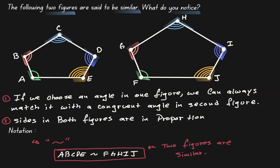The order matters when we are naming similar polygons. Those angles which are congruent need to be in the same location. Angle A was congruent to angle F, so notice that they are both in the first position in our statement. Angle B was congruent to angle G, so they are both in the second position. Angle C was congruent to angle H, so they are in the third position, and so forth. We have to be careful with how we name our figures.